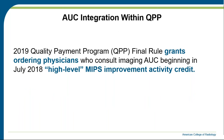There is one of the four performance categories under the Merit-Based Incentive Payment System — quality, cost, promoting interoperability, and improvement activities. One of the improvement activities, applicable to ordering professionals, is a high-level MIPS improvement activity credit for those engaged in that AUC clinical decision support at the point of ordering.